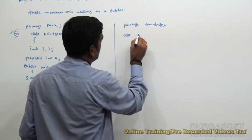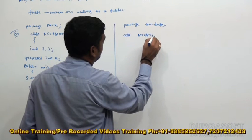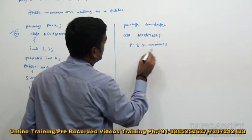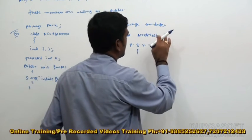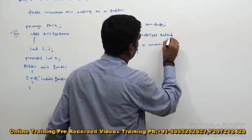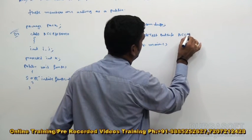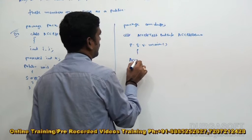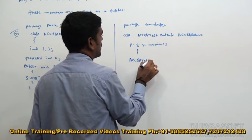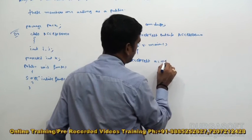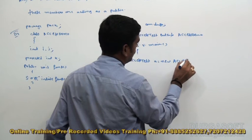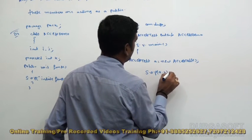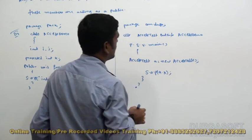Then class AccessTest — under that, public static void main. Now here, we need to use extends AccessDemo. Now in this case, we need to create an object of AccessTest only: AccessTest A = new AccessTest(). Then System.out.println(A.k).